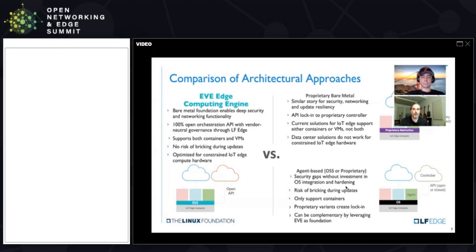If you don't do hardening of the OS, you're going to have security issues. The whole point is: if you integrate the agent with the OS, you've just built EVE. So the idea is, just use EVE and let's build a community around that — do that Android thing for the IoT edge and make it a lot easier to scale long-term.